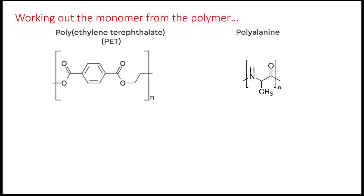To finish off, let's try working out what monomers a couple of condensation polymers were made from. The polymer on the left is PET, polyethylene terephthalate, while the one on the right is polyalanine. The first thing to figure out is whether it's a condensation homopolymer or a copolymer. Copolymers will tend to have a longer repeating unit, and possibly also a longer name, because each unit will include both monomers. Copolymers will also have two ester or amide groups in the repeating unit, and they'll face in opposite directions, whereas homopolymers will have only one.